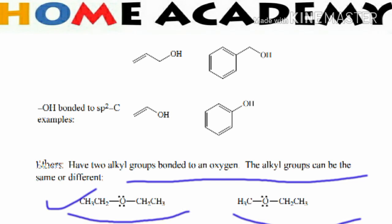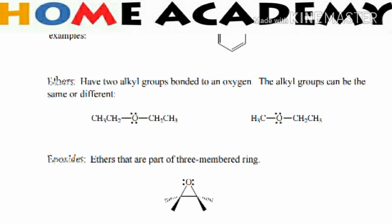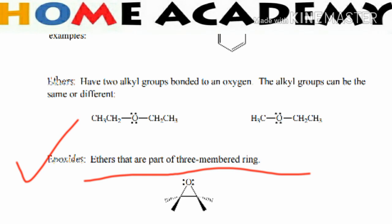An example is diethyl ether, where two ethyl groups are bonded to an oxygen atom — these alkyl groups are the same. Epoxides are ethers that are part of three-membered rings.